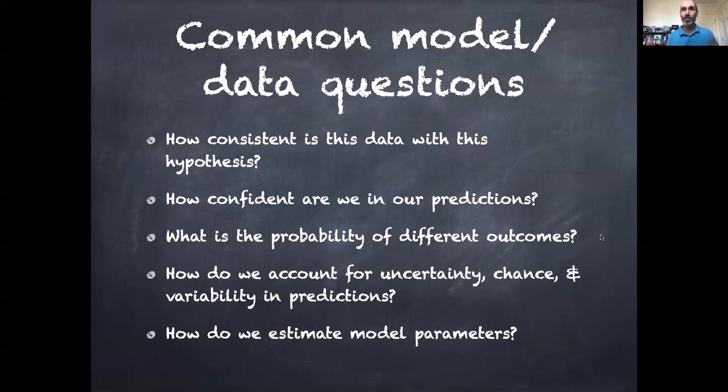How confident are we in our predictions? What is the probability of different outcomes occurring? How do we account for uncertainty, chance, and variability when making predictions? And then how do we estimate parameters in the models that we're using to do this?